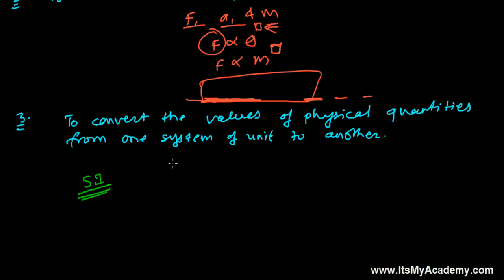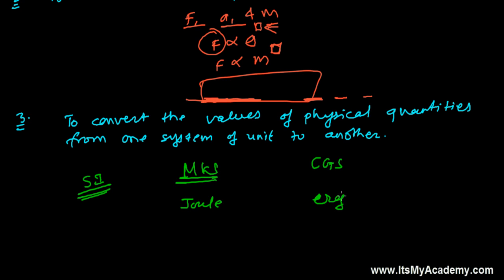Anywhere, if you want to convert — for example, in the MKS system the unit of energy is the Joule, and in the CGS system the unit of energy is the Erg. How will you make a relationship? How will you convert, say, one Joule into a certain number of Ergs? One Joule equals how many Ergs? That conversion we can learn here, and we can find out that answer using dimensions.